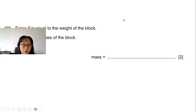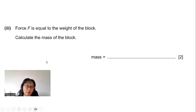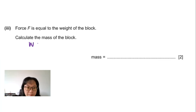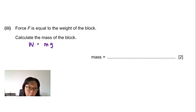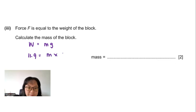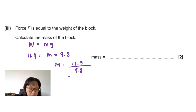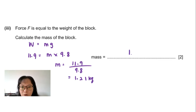Part 3: Force F equals the weight of the block. Calculate the mass of the block. Using W = mg: 11.9 = m × 9.8. Therefore mass = 11.9 ÷ 9.8 = 1.21 kg, or 1.2 kg to two significant figures.